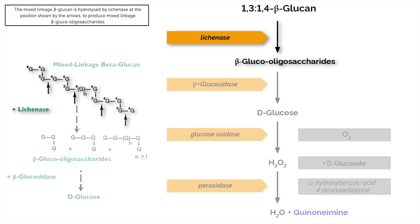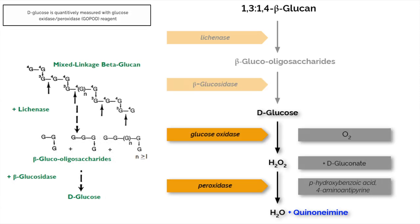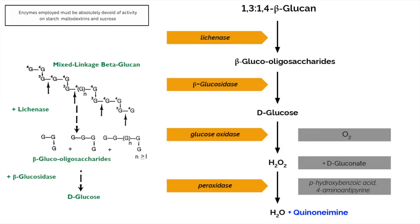The mixed linkage beta-glucan is hydrolyzed by lichenase at the position shown by the arrows to produce mixed linkage beta-glucoligosaccharides. These are then hydrolyzed by beta-glucosidase to glucose. D-glucose is quantitatively measured with glucose oxidase peroxidase GOPOD reagent. The amount of D-glucose measured is stoichiometric with the amount of beta-glucan in the sample. Enzymes employed must be absolutely devoid of activity on starch, maltodextrins and sucrose.